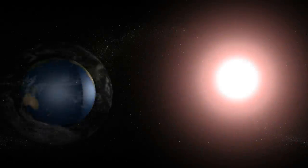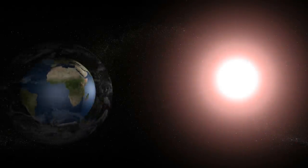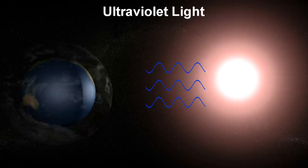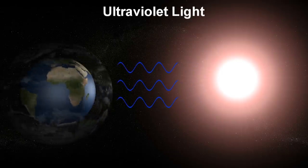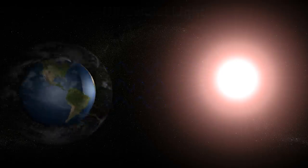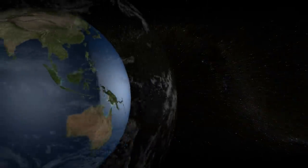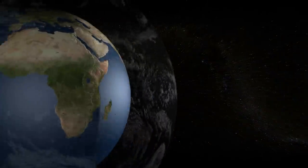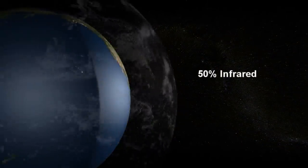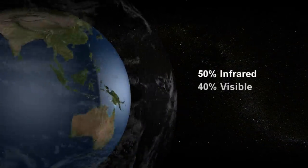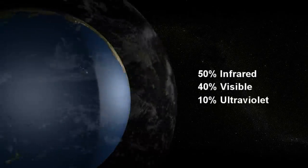Along with the visible light that illuminates our world, the sun emits ultraviolet light as well. In deep space, unaffected by the Earth's atmosphere, sunlight is composed of 50% infrared, 40% visible, and 10% ultraviolet light.